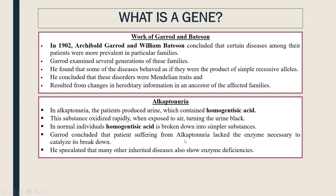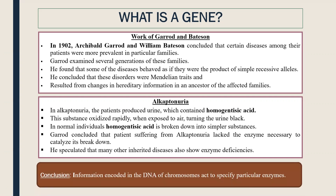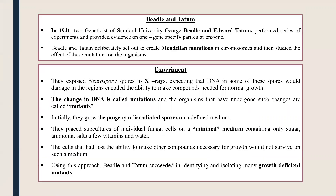Garrod concluded that patients suffering from alkaptonuria lack the enzyme or protein that can break down homogentisic acid. It was speculated that there are other diseases caused by such enzyme deficiencies, where the DNA of the chromosome is damaged for some reason.